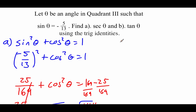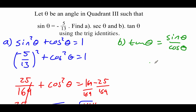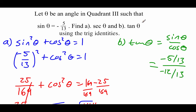We still need to find the tangent. For part B, I'm going to do the same thing — sine over cosine gives us the tangent. We know the sine value is negative 5 over 13, and earlier we found the cosine value to be negative 12 over 13.